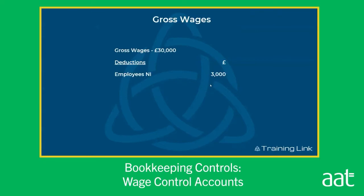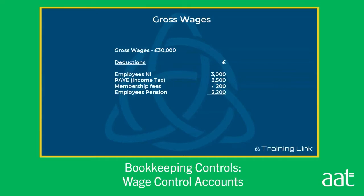So let's look at those deductions. Employee's national insurance — in this example, that's £3,000. PAYE — our income tax — £3,500 in this example. Membership fees: when you become AAT members after fully passing all your qualifications, you may want to pay those membership fees, and in some organisations it's possible to have those deducted directly from your wages. Employee's pension — some organisations give you a pension contribution from the employer but expect you to make a contribution yourself as well. Total deductions in this example: £8,900.